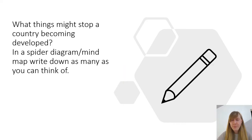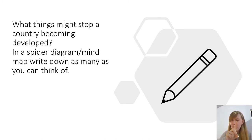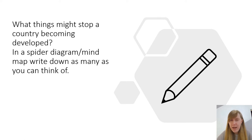Grab a pen and paper and write down as many things as you can think of that might stop a country being as developed as another country. Pop 'development' in the middle and around the edge write as many things as you can think of. Pause the video and do that now.